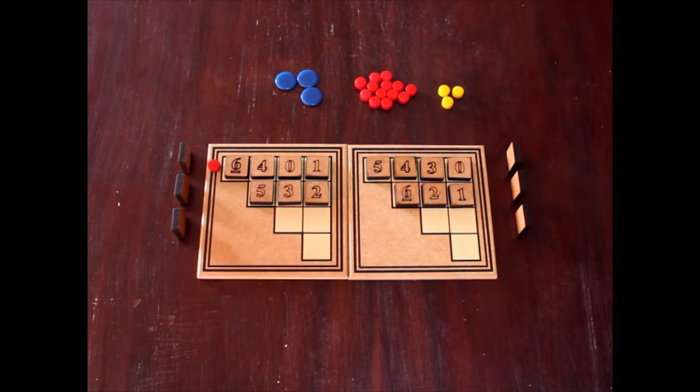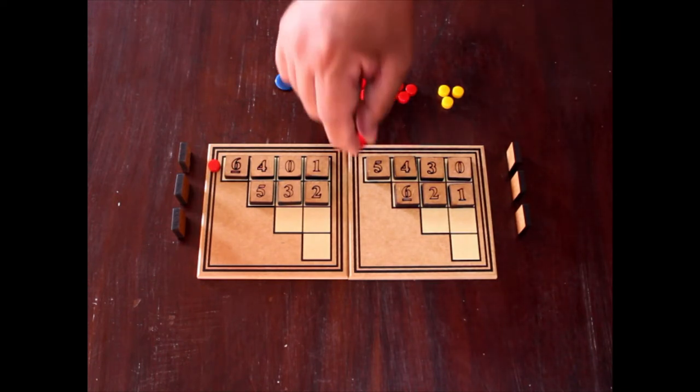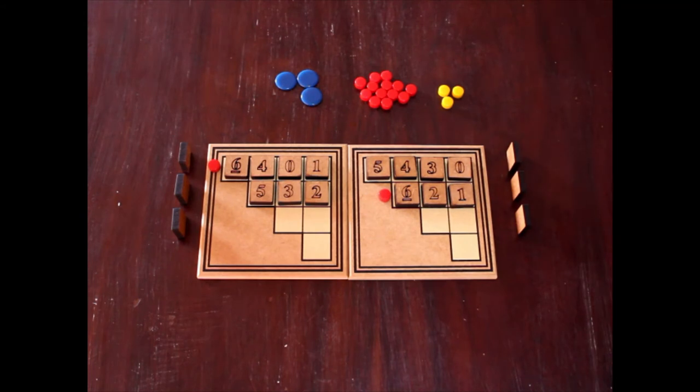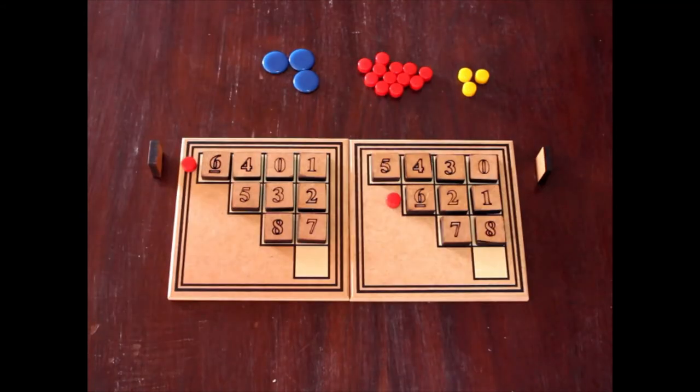They repeat the process for the second and third lines, each time one player forming the highest number.